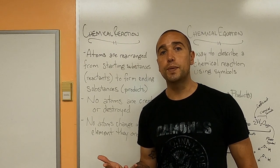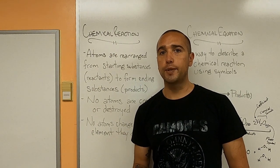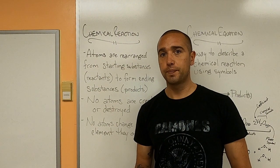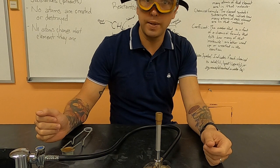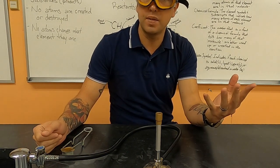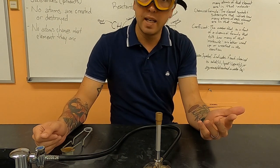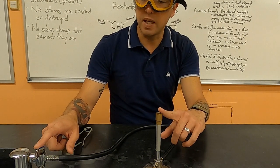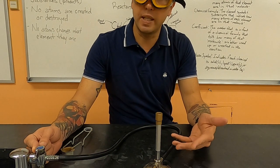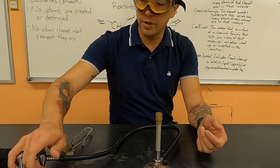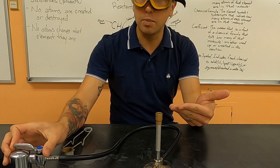We're going to look at an example of a chemical reaction and then talk about how it can be described on paper through a chemical equation. This first reaction example is going to be between oxygen gas, which is in the air — its formula is O2 — and methane gas, which is going to come from the faucet. Natural gas is made up of methane, and its chemical formula is CH4. I can turn on the gas and the methane and the oxygen are mixing now but not yet reacting.